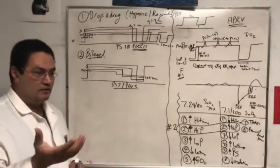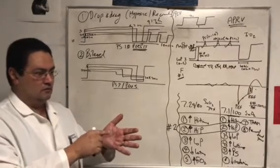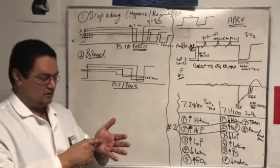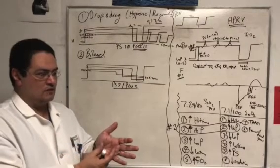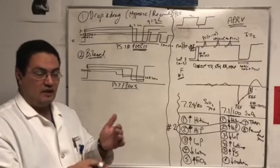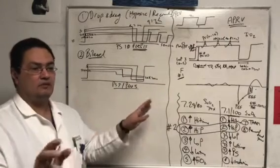Bi-level and APRV unfortunately are the same button on the vent. Even here, this is APRV slash biphasic, that's the name of the mode. They're really two modes but they have to say why they are the same button because they have the same set parameters, but they are completely different modes.